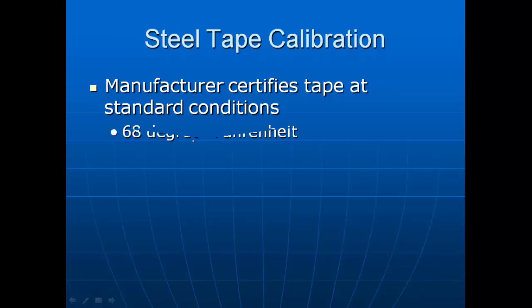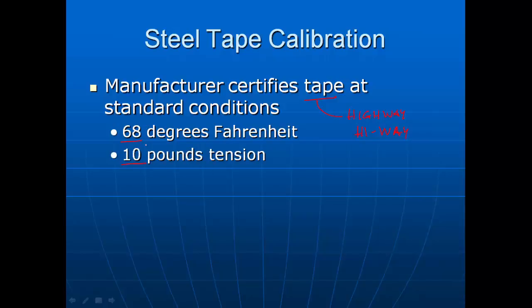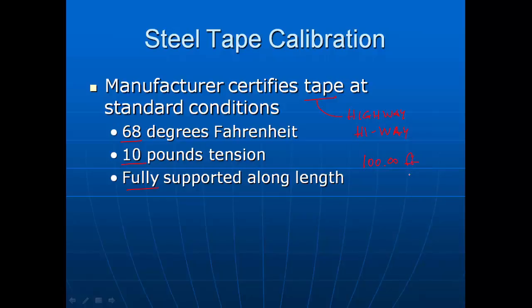When you purchase the type of tape we are going to use — what we call a highway tape (the manufacturer spells it H-I-W-A-Y) — this type of tape is certified at 68 degrees Fahrenheit, at ten pounds of tension, and at a fully supported condition to be exactly 100.00 feet long. That is the type of tape we will use in this lab.